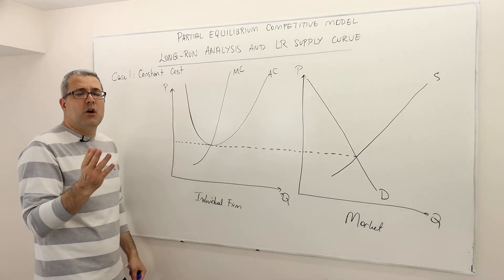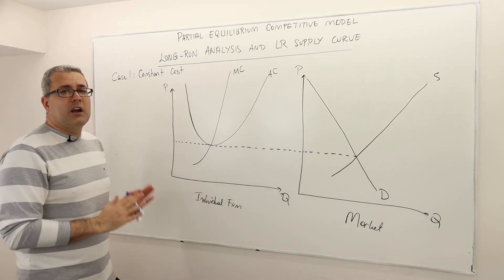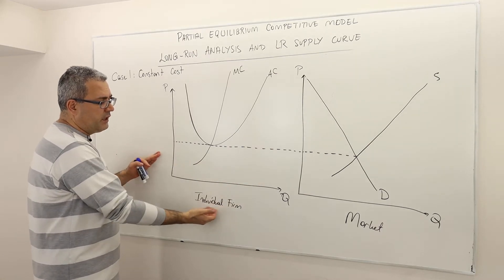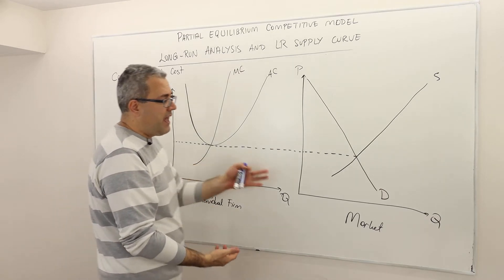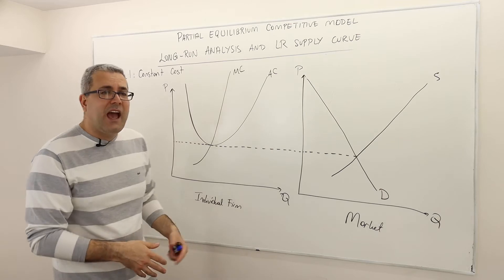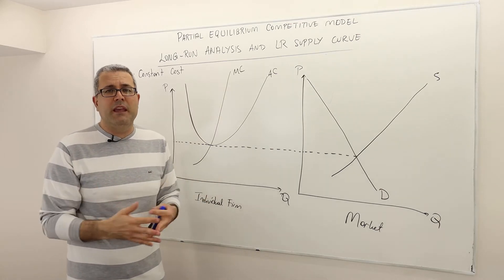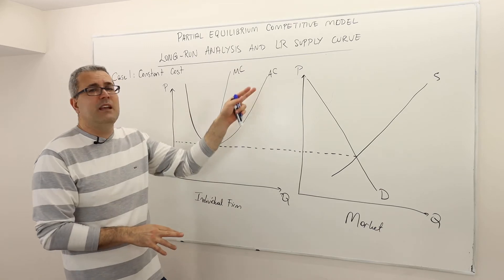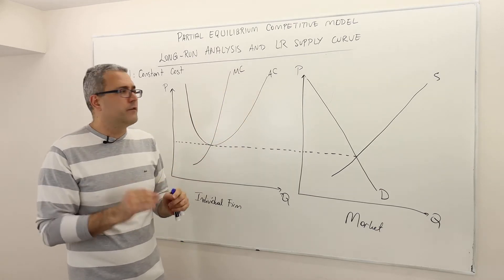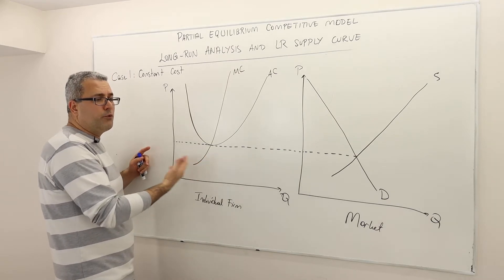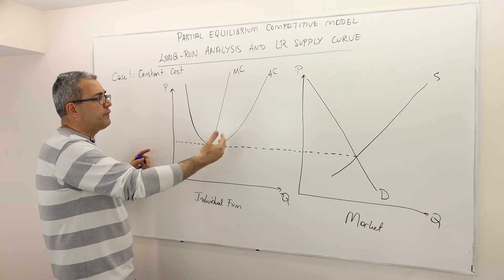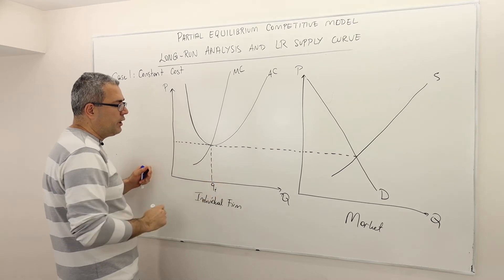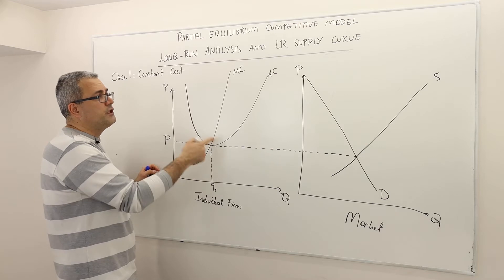So demand increases — more consumers enter this market. I have two graphs here. One graph represents what happens for an individual firm, and the other shows what happens in the market. Let's suppose this market has identical firms — assume all firms have exactly the same average cost and marginal cost curve. The long-run equilibrium in a competitive market means each firm is producing quantity Q_old, where price equals marginal cost, which is equal to average cost.